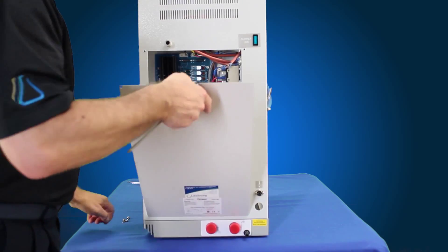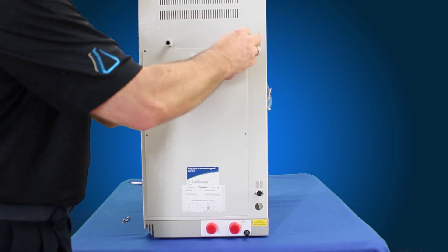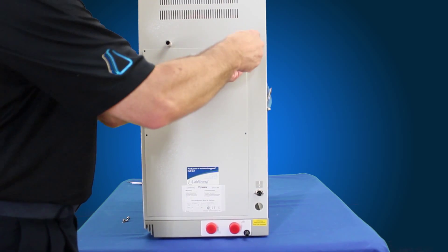Now that you have the thermistor connected to J2 on the main board, we're going to go ahead and attach the right side panel back onto the unit.